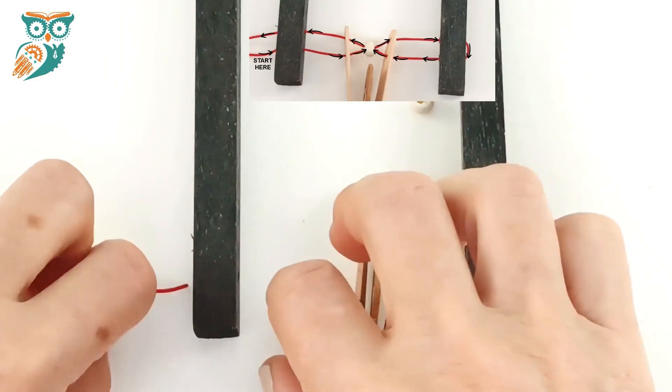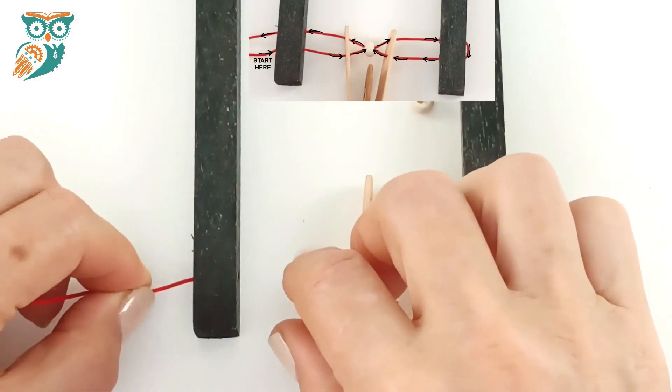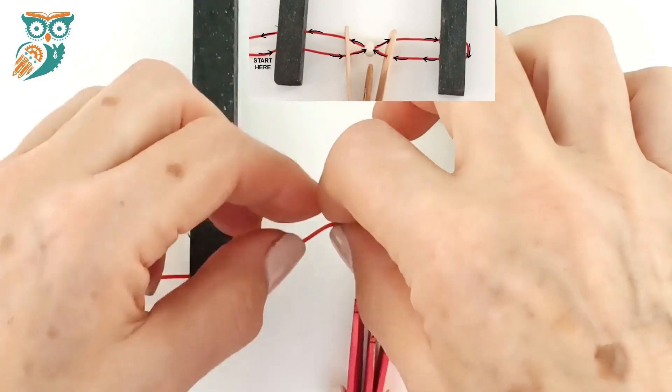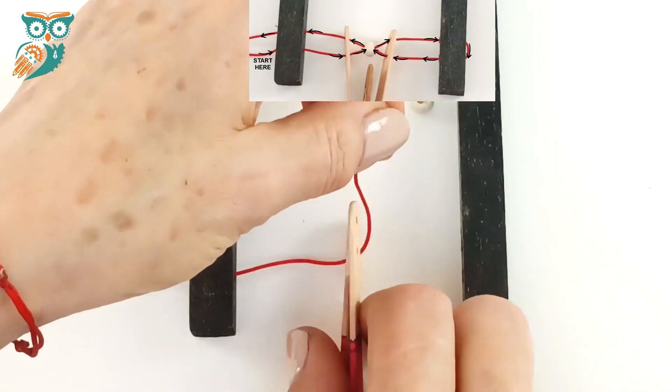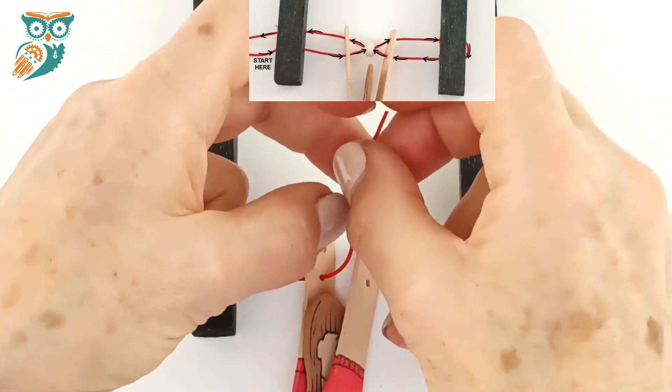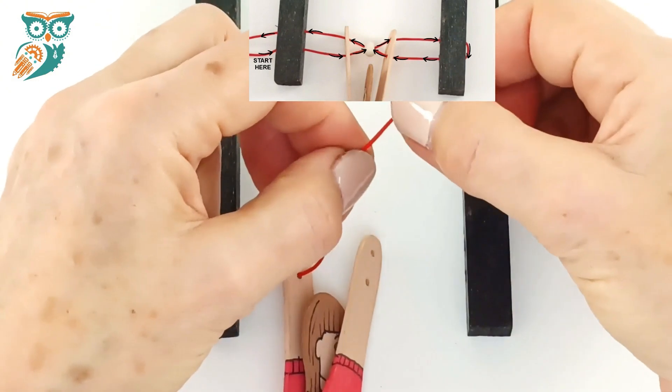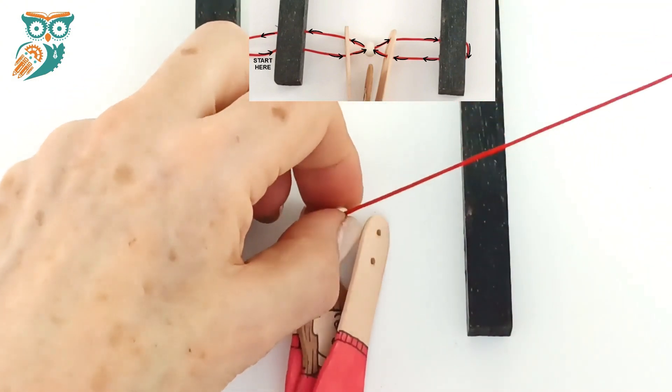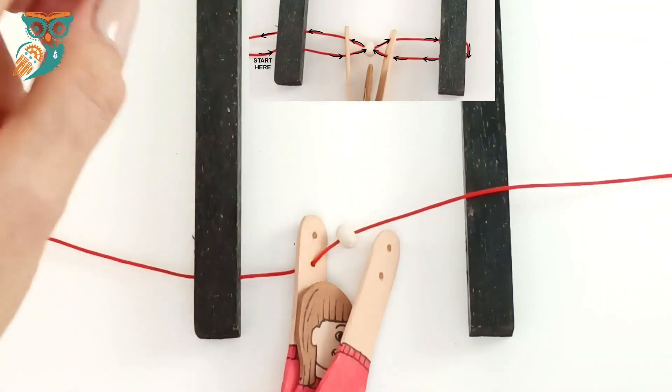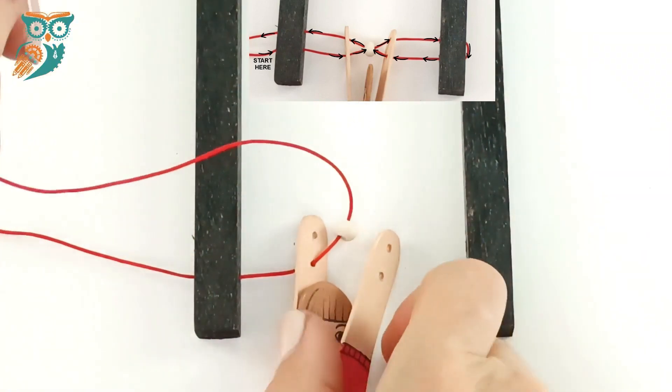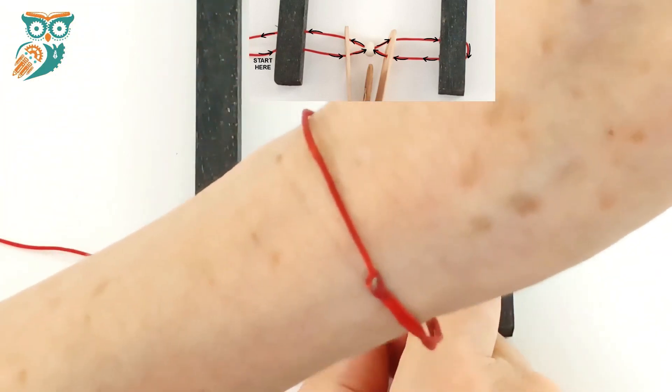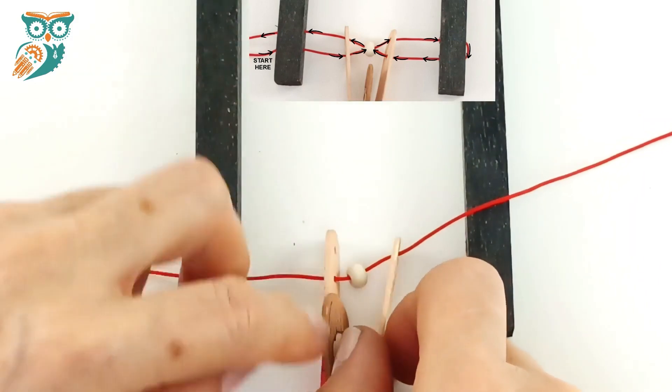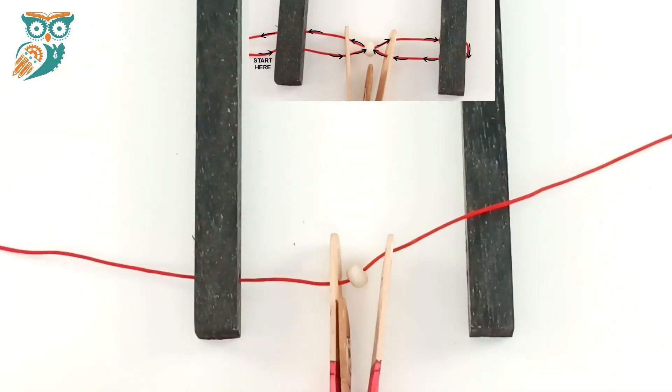So this threading process can be a little confusing, but once you see it you'll see it's actually quite simple. We're going to go through the bottom hole and then through the bottom of our acrobat's left hand, and then we're going to add a wood bead onto the thread. Then we're going to go through the top hole of the right hand. We're just going to put it through there, and then we're going to do the top hole on the right hand side of the frame.